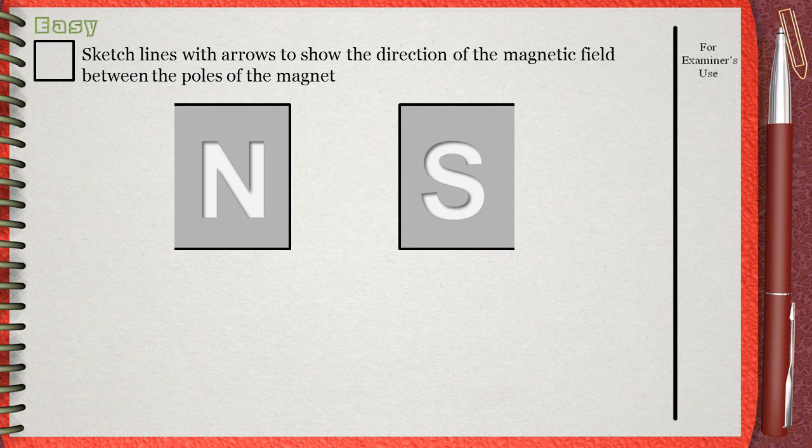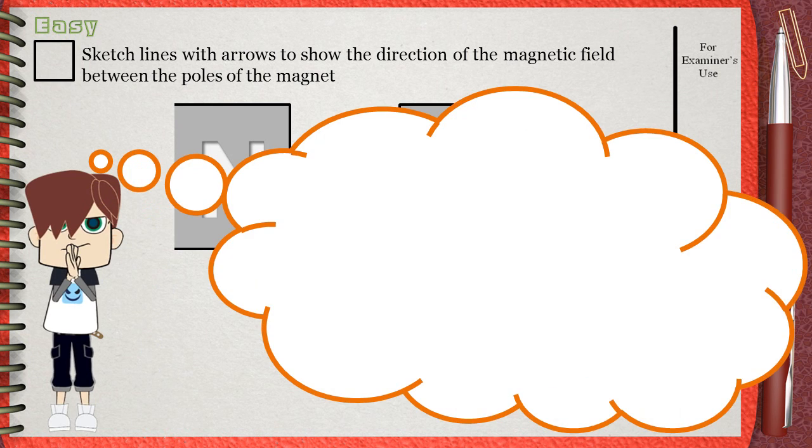This is another easy question: sketch lines with arrows to show the direction of the magnetic field between the poles of the magnet. It's required to know how to draw the shapes of magnetic fields.